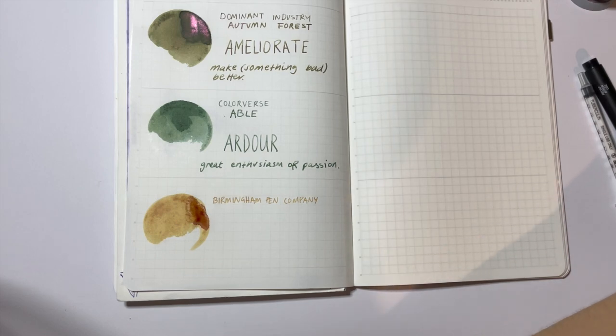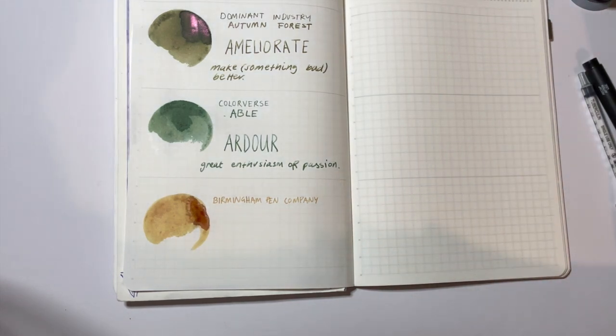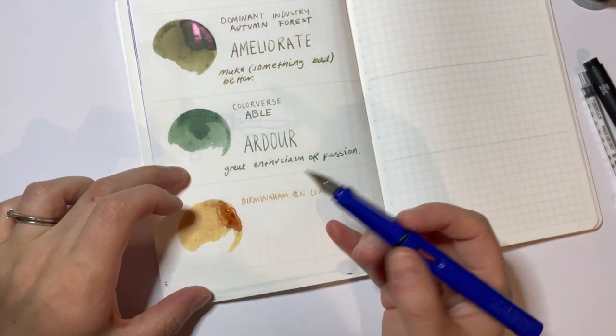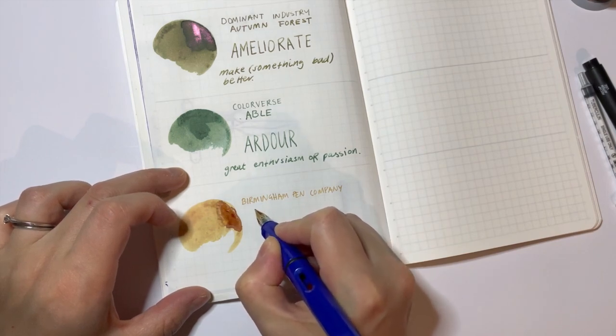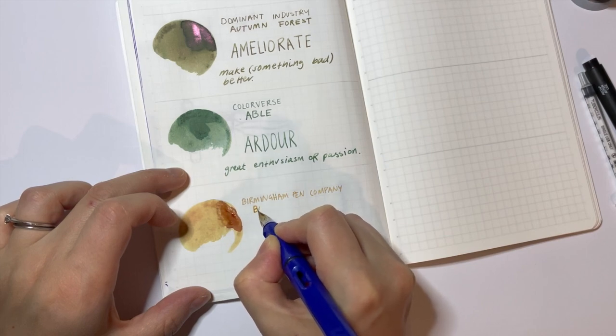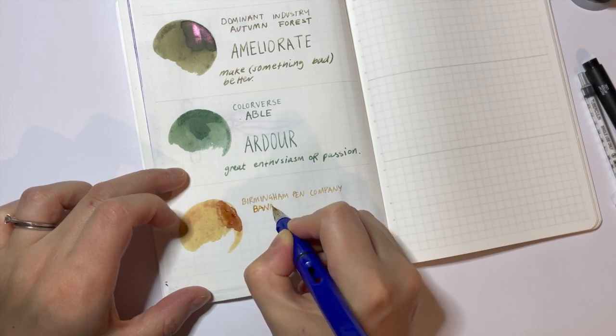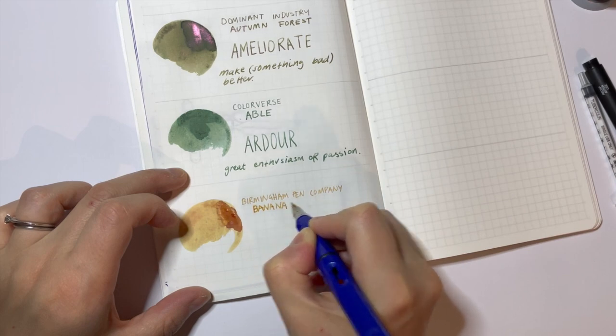They're just really right up my alley. As you can, you know, I probably sound like a bit of a broken record but I love inks that when they're lighter you can still read them and this completely ticks that box for me. I think it's really really legible which is awesome. And now let's do the name of it. Banana slug.